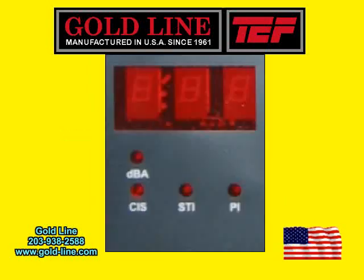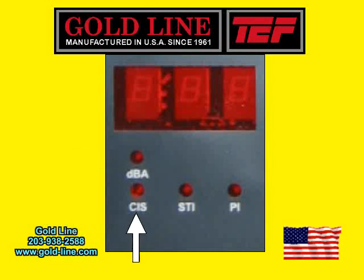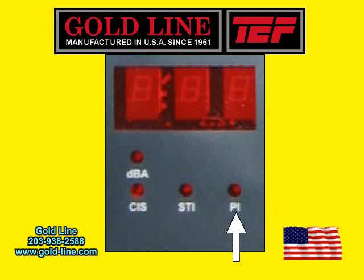Just so you always know what you are looking at, the four single LED lights below the screen show you when the meter is reading an SPL-DBA level, a CIS score, an STI score, or an optional mode for privacy measurements known as PI.